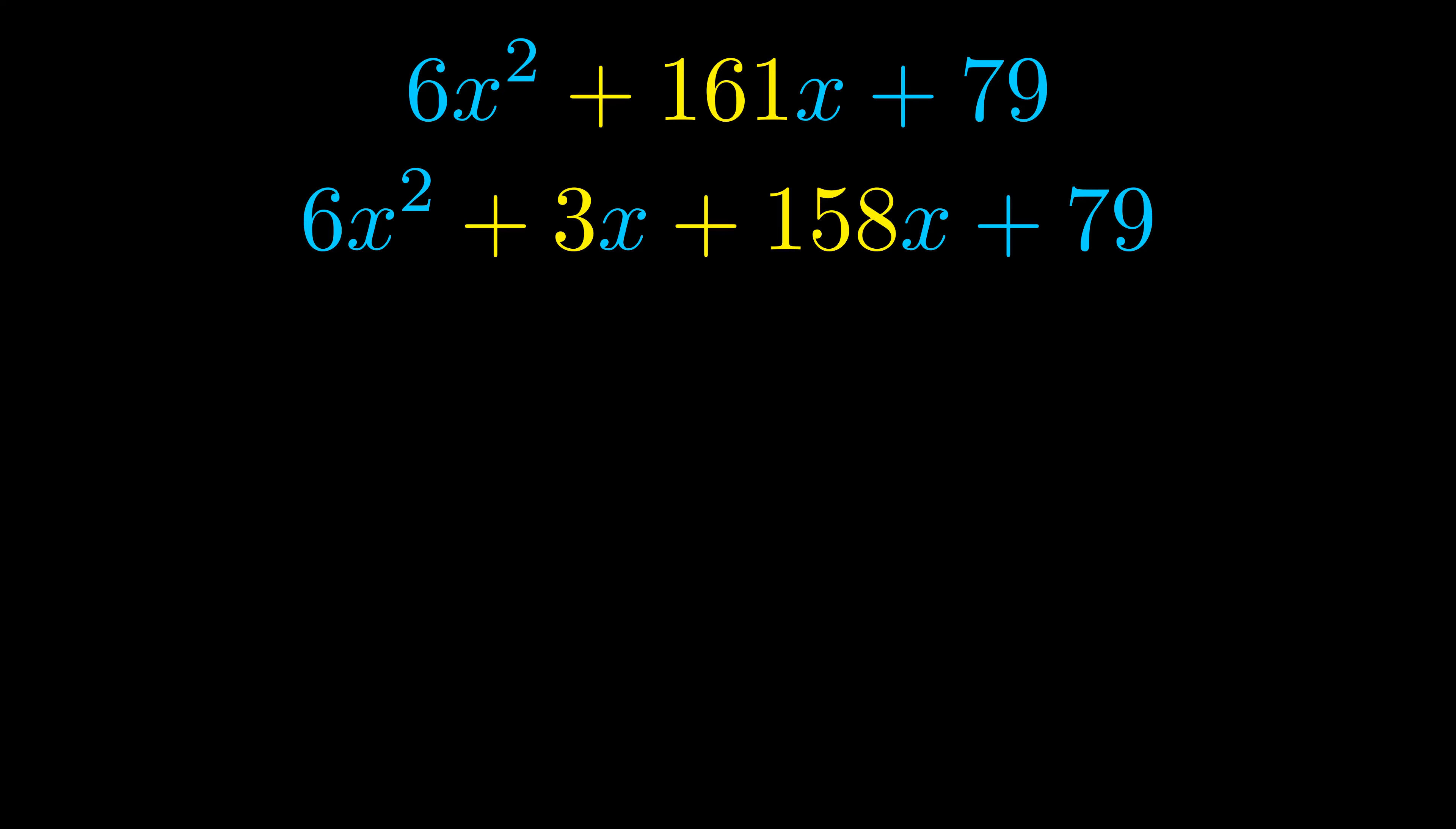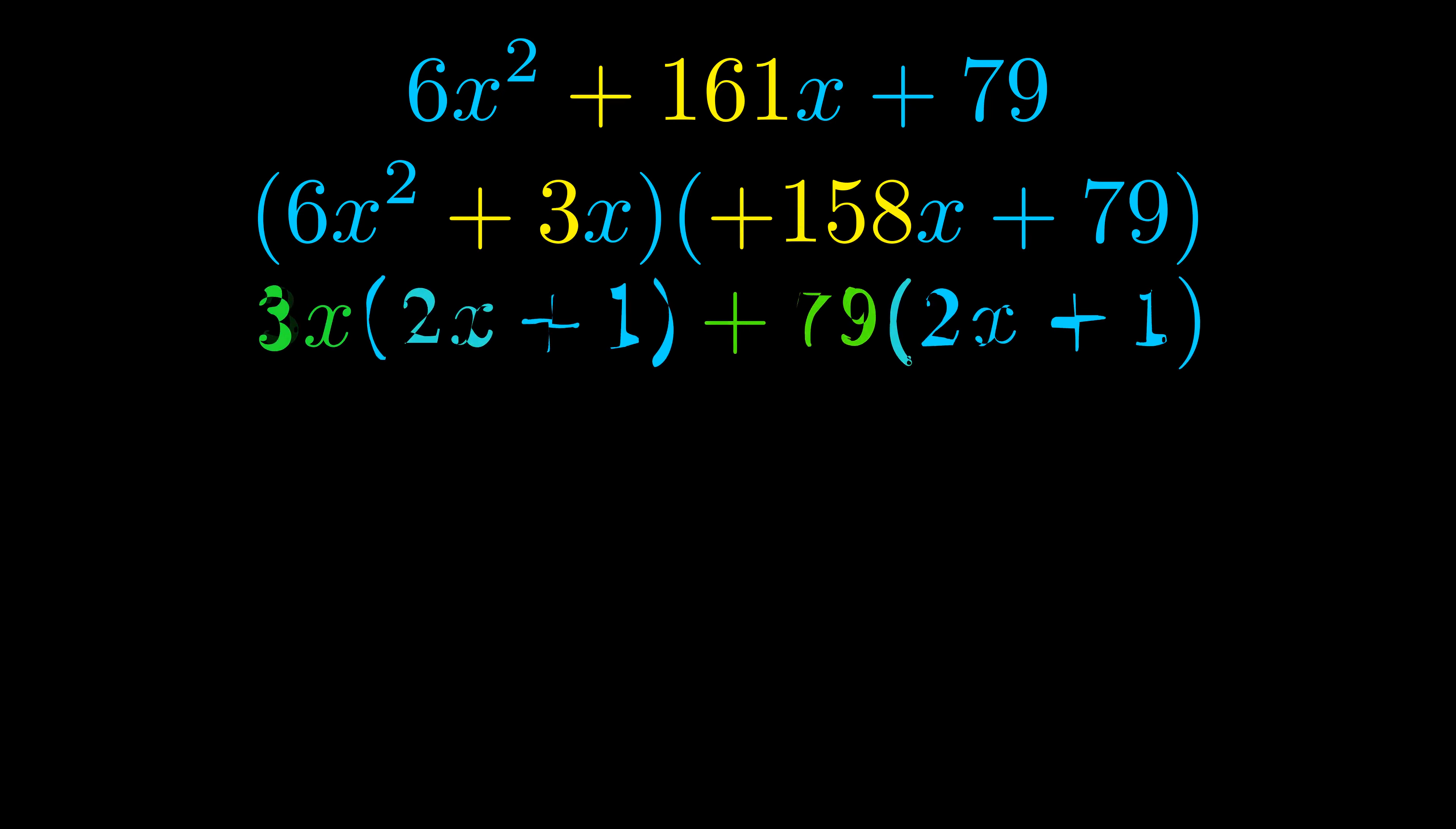Once we've done this, we go ahead and put parentheses around the first term and the last term. And we do that so we can take the greatest common factor out of both terms. We can see the greatest common factor is now outside in green.